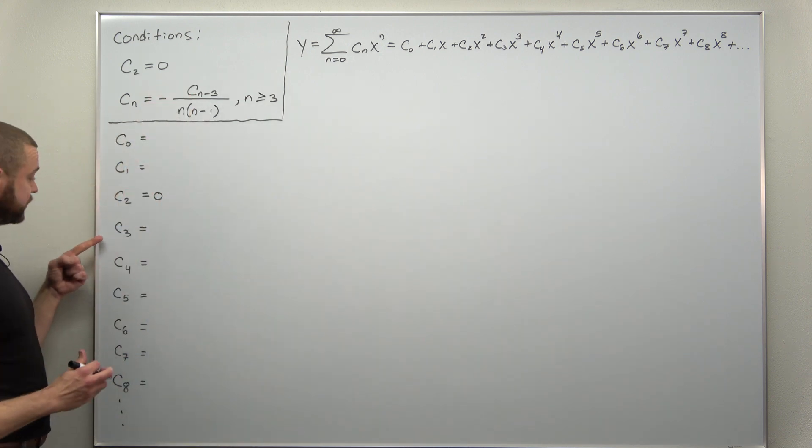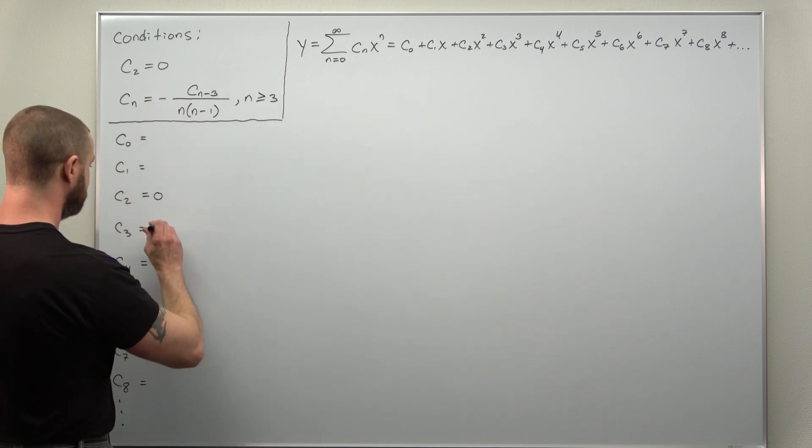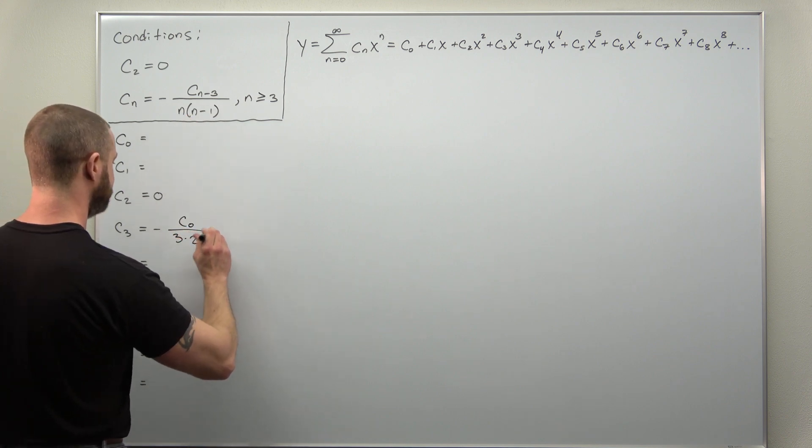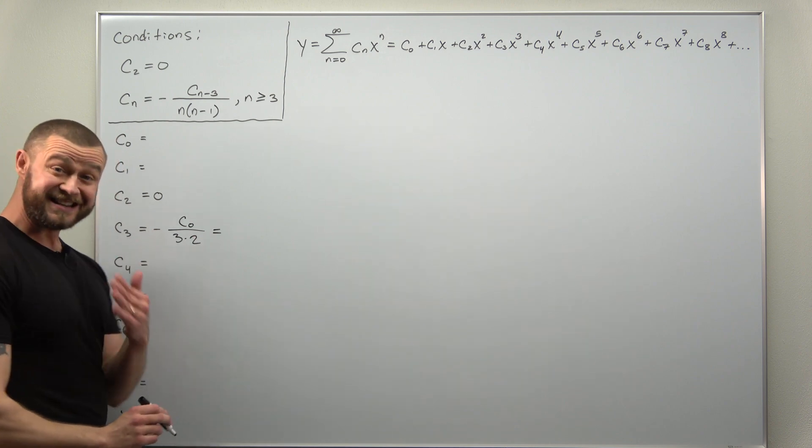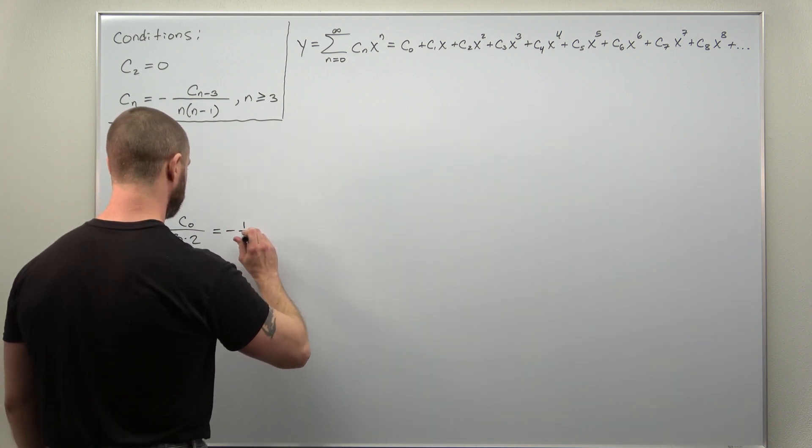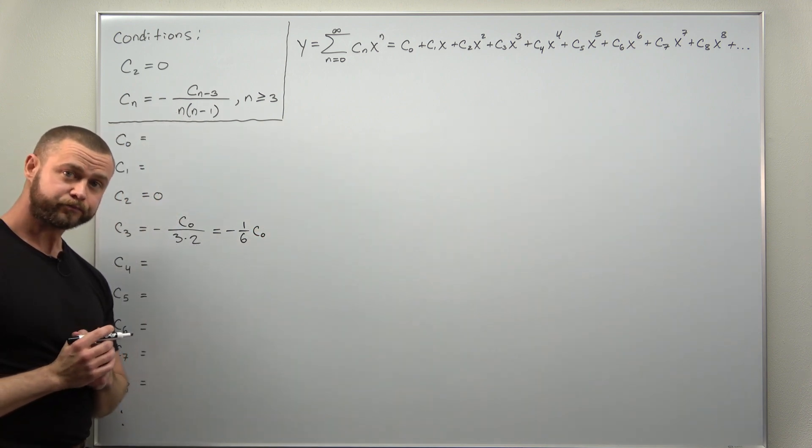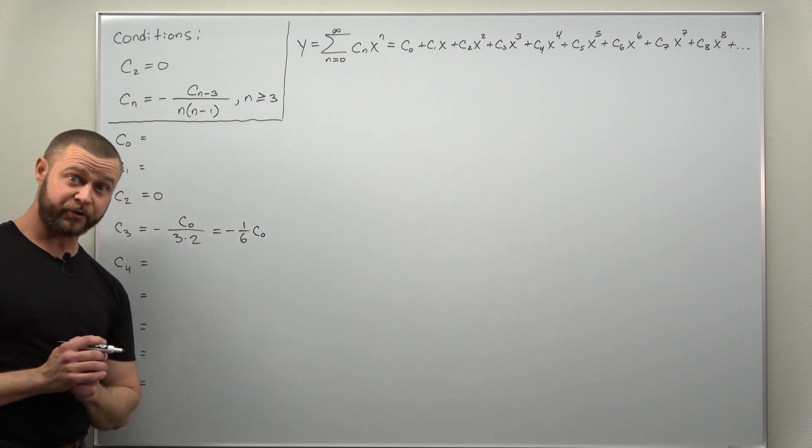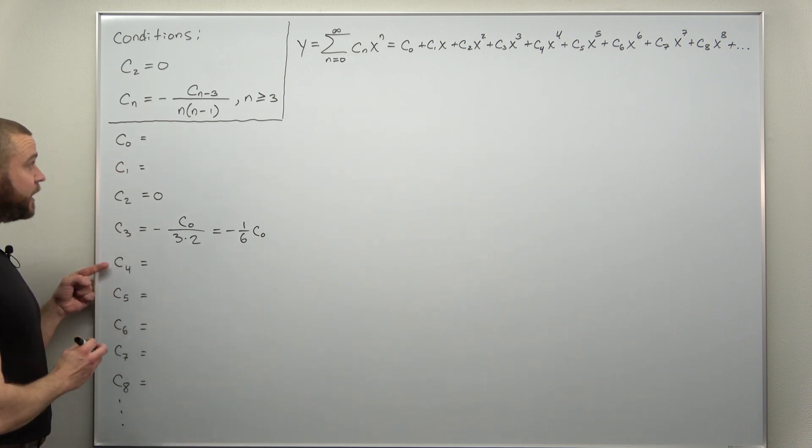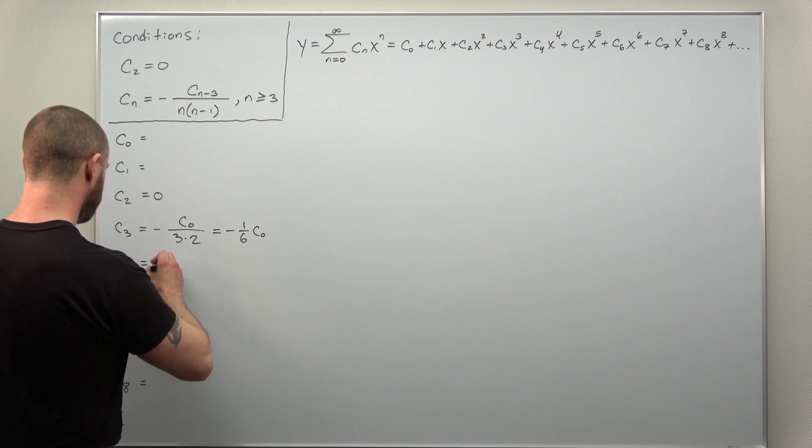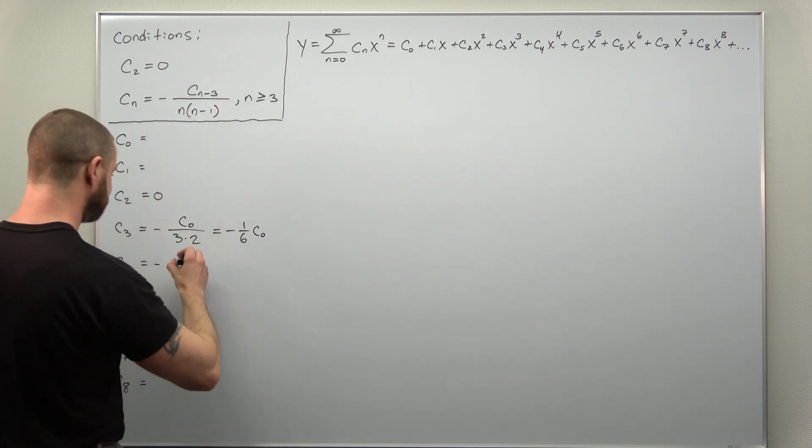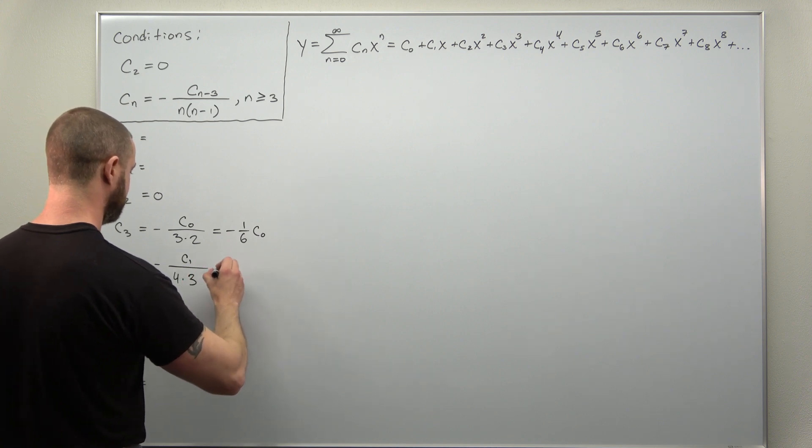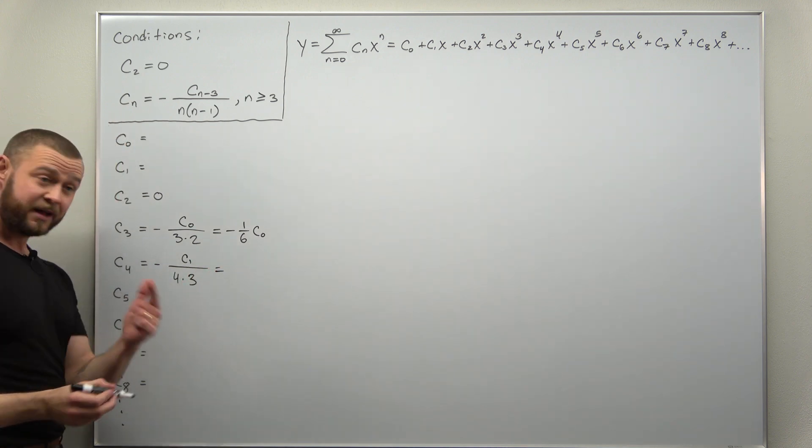Without initial conditions, all these other higher index coefficients we're going to determine in terms of c0 and c1. So let's iterate our recurrence relation. Plug in now n equals 3. Looks like we get minus, that's going to give us c0, and that's 3 times 2. And at best we simplify this as it looks like negative 1 sixth times c0. Again, if we had initial conditions, we would have the value for c0, which would then give us the value for c3. All right, let's go ahead and iterate again to get the value for c4. We're going to plug in our index here now as 4. So plug in n is 4, we get c1, and that's going to give us now in the denominator 4 times 3. And looks like we can simplify that as negative 1 twelfth times c1.